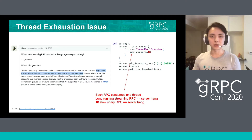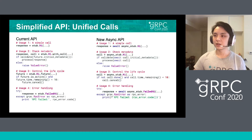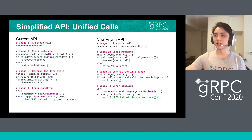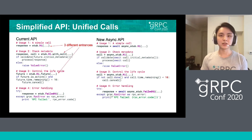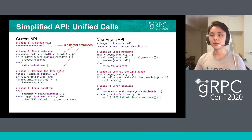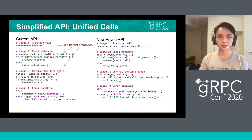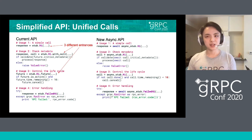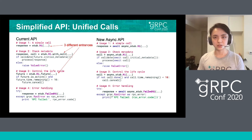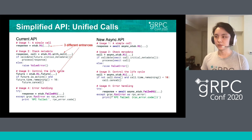Luckily, this problem will no longer exist with the asyncio API. Moreover, we're trying to unify the call entrance on the client side. Currently there are three ways to invoke an RPC: you can invoke it directly, invoke it with a call method, or invoke it with a future method. This creates some confusion for users about how and when to use it. Well, in the new API, there is only one unified way to invoke it.